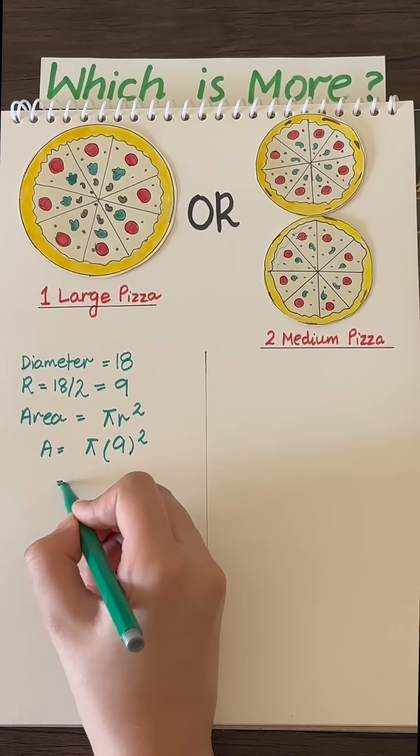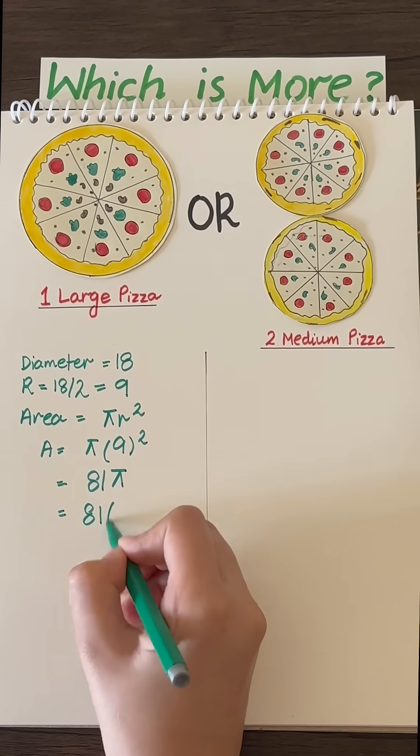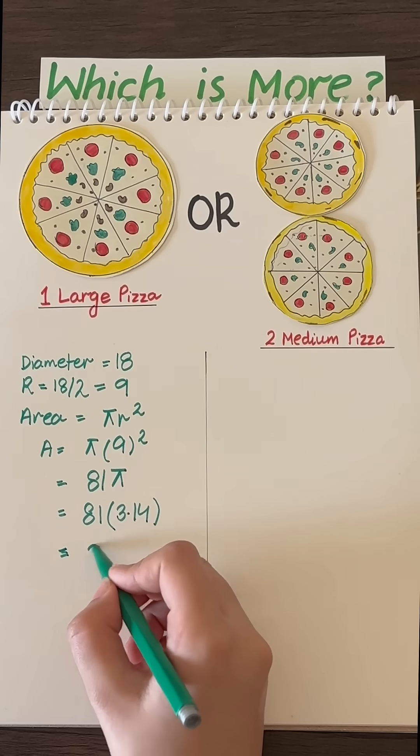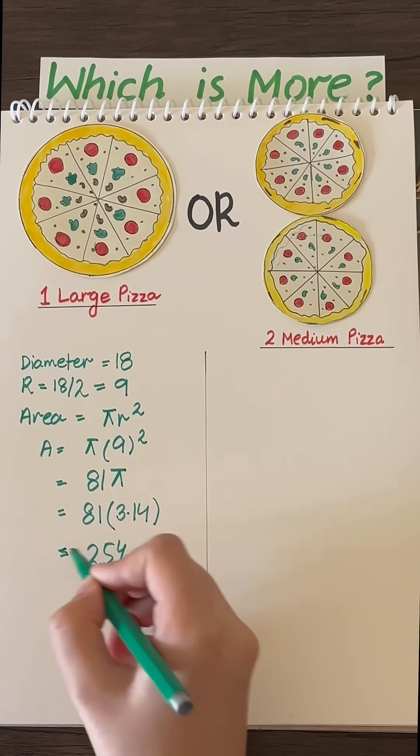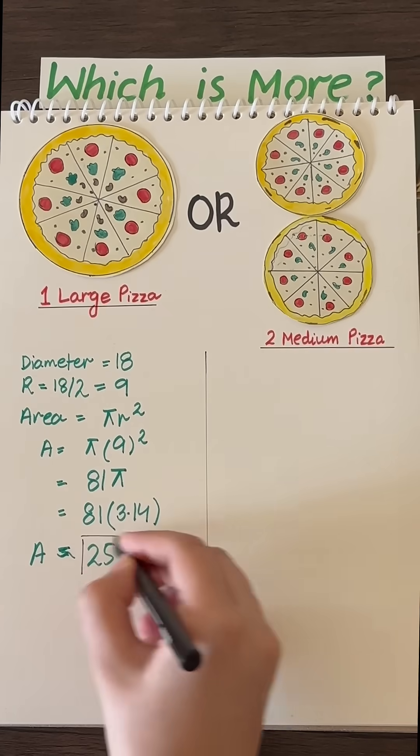This means 9 squared is 81. Now we multiply 81 by pi, where pi is 3.14, and 81 times 3.14 gives us an approximate area of 254. That means one large pizza has an area of 254 square inches.